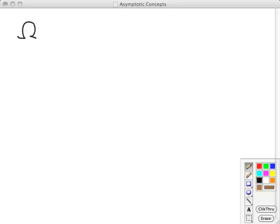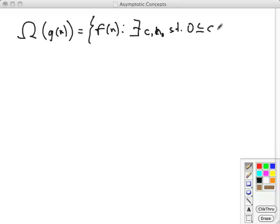So the definitions for omega are very simple revisions of the one we just saw for big O. The set definition, which I'll write out a little bit more briefly this time. It's a set of all functions such that there exists, again, positive constants c and n0 such that 0 ≤ c·g(n) ≤ f(n) for all n ≥ n0.